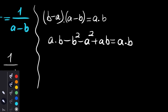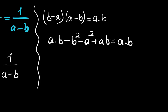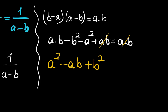Let's cancel one of the a times b terms. We have a times b minus b squared minus a squared is equal to 0. Now let's move everything to the other side to get a squared minus ab plus b squared.